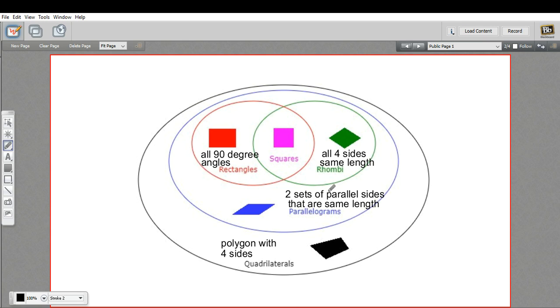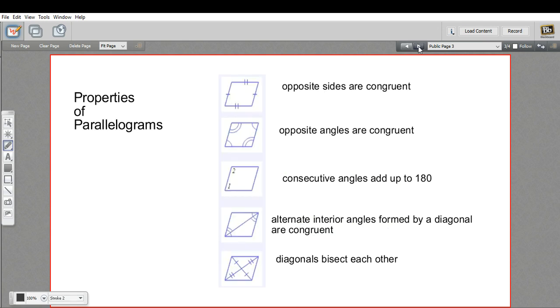A parallelogram has two sets of parallel sides that are of the same length. And then it's got these other properties. Those opposite sides are congruent, as I mentioned. Then the opposite angles are congruent. The consecutive angles add up to 180. These alternate interior angles formed by a diagonal are congruent. And then the diagonals bisect each other. That's all of the properties we've been talking about, about parallelograms.